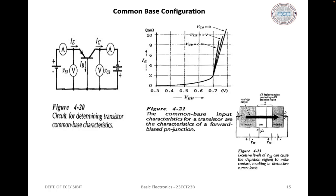For voltage amplification, consider a circuit where transistor Q1 has Beta DC = 50. A 0.7 V DC source forward biases the base-emitter junction, and an AC signal source in series with VB provides ±20 mV input voltage. The transistor collector is connected to a 20 V DC supply VCC via a 12 kΩ collector resistor R1.